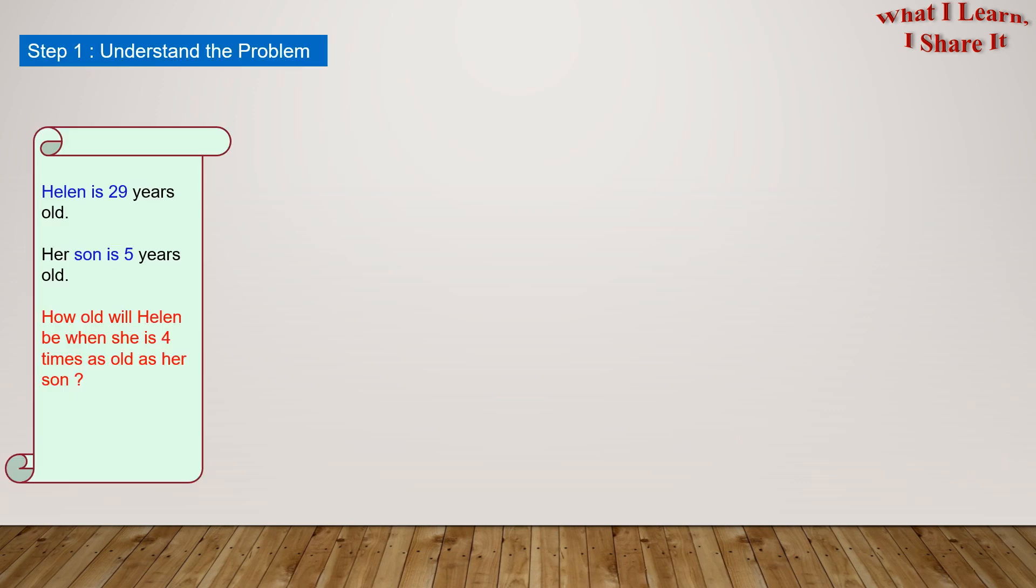Step one. Understand the problem. So what are we given? We are given that Helen is 29 years old. So in our own words, we could say that Helen's age equals 29.